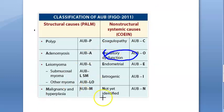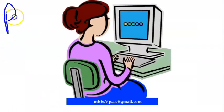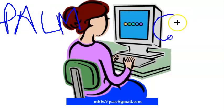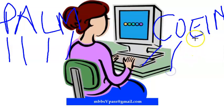Regarding ovulatory dysfunction: this is where the endocrine causes fit in. It covers oligo-ovulation, anovulation, polycystic ovarian changes, and corpus luteum dysfunction. Ovulatory dysfunction can be caused by hypothyroidism, hyperthyroidism, hyperprolactinemia, obesity, hypothalamic dysfunction, stress, and weight changes. So remember, endocrine causes are captured under ovulatory dysfunction in the PALM-COIN classification.